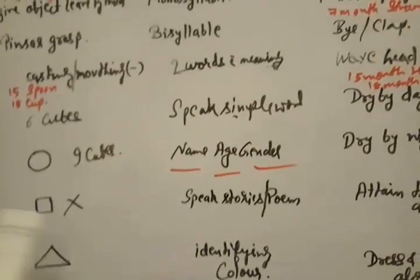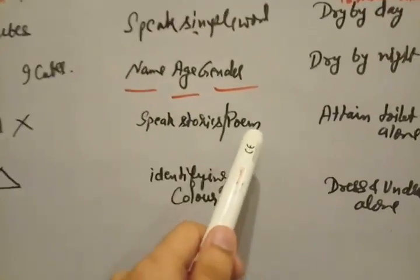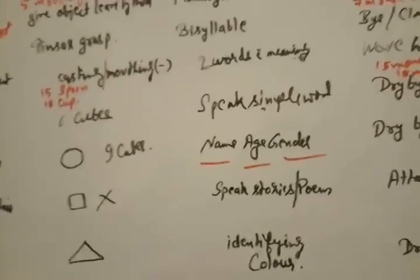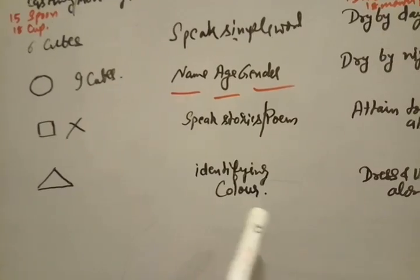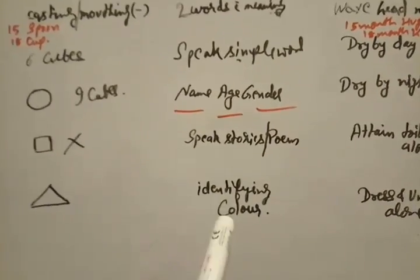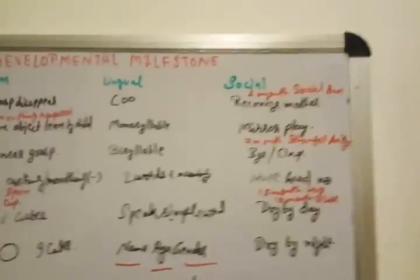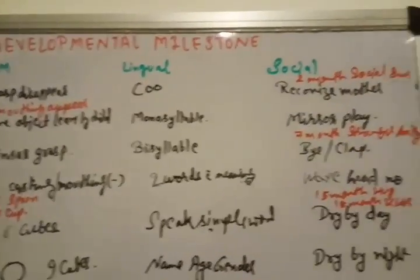At 4 year of age, child speaks stories and poems. If you ask, please tell me that Johnny Johnny yes Papa, some poem like this, he will be able to answer. At 5 year of age, he identifies the colors. He will speak this is red color, brown color, anything.